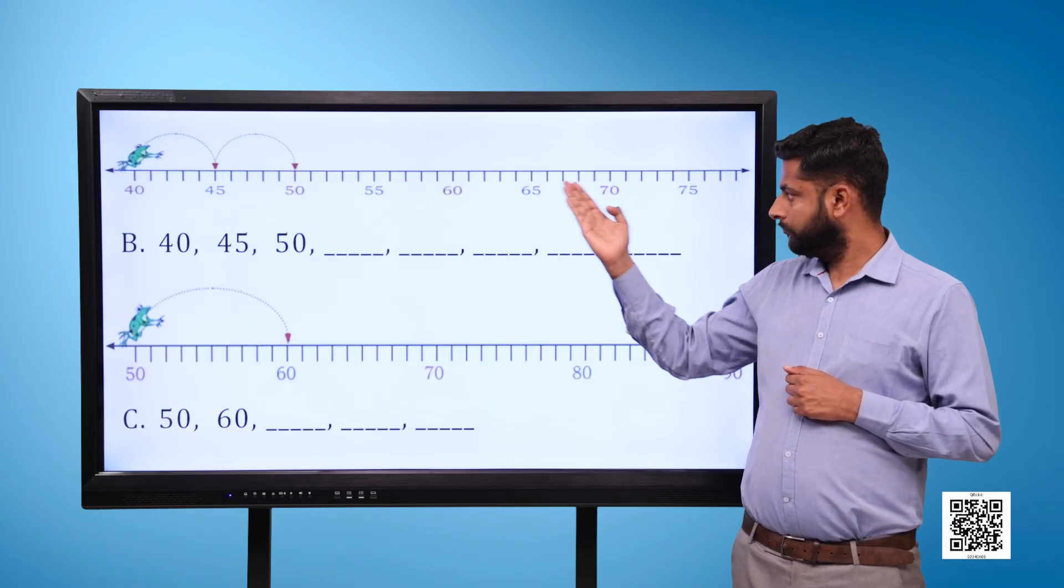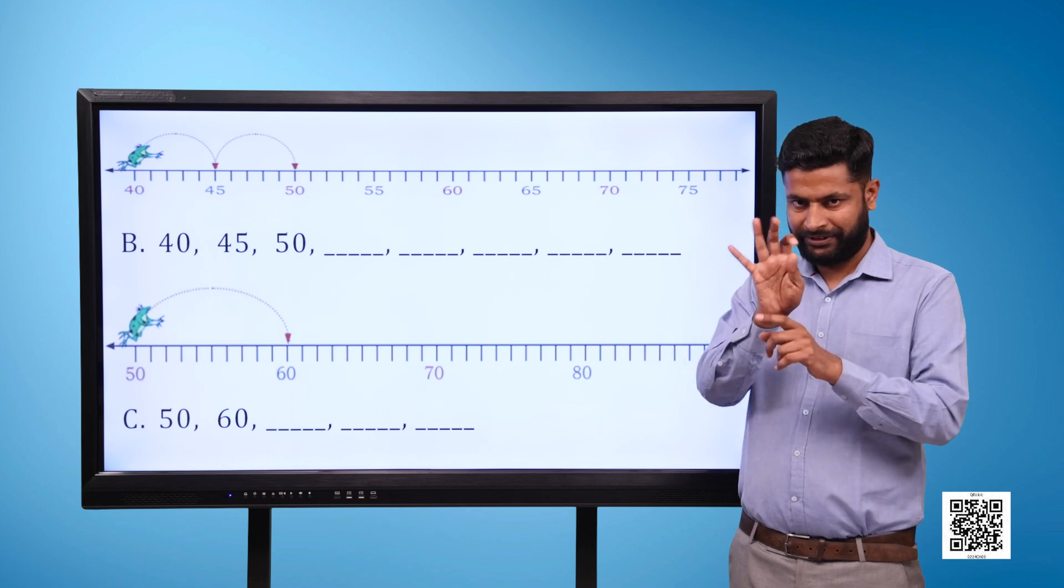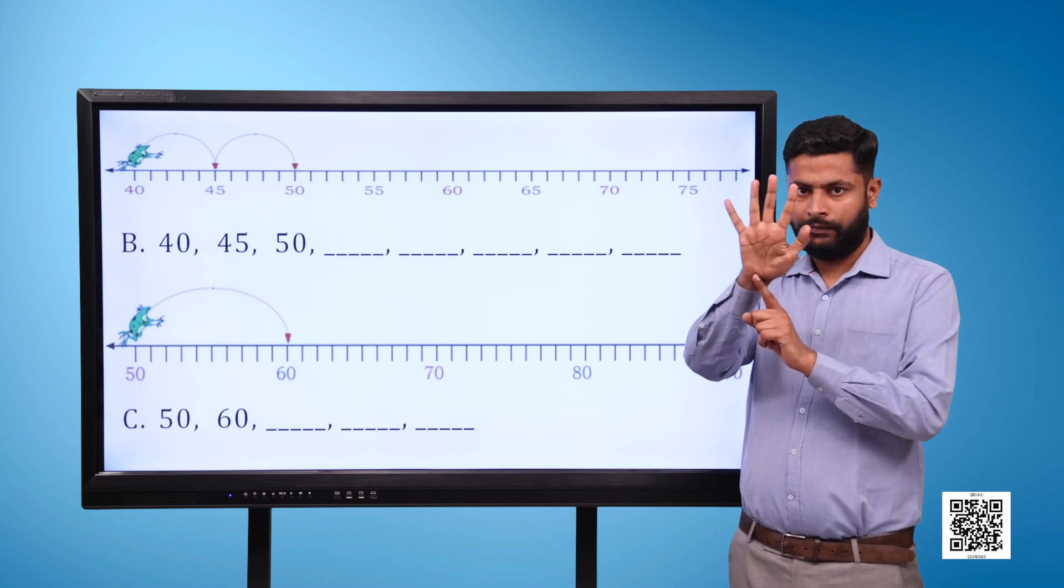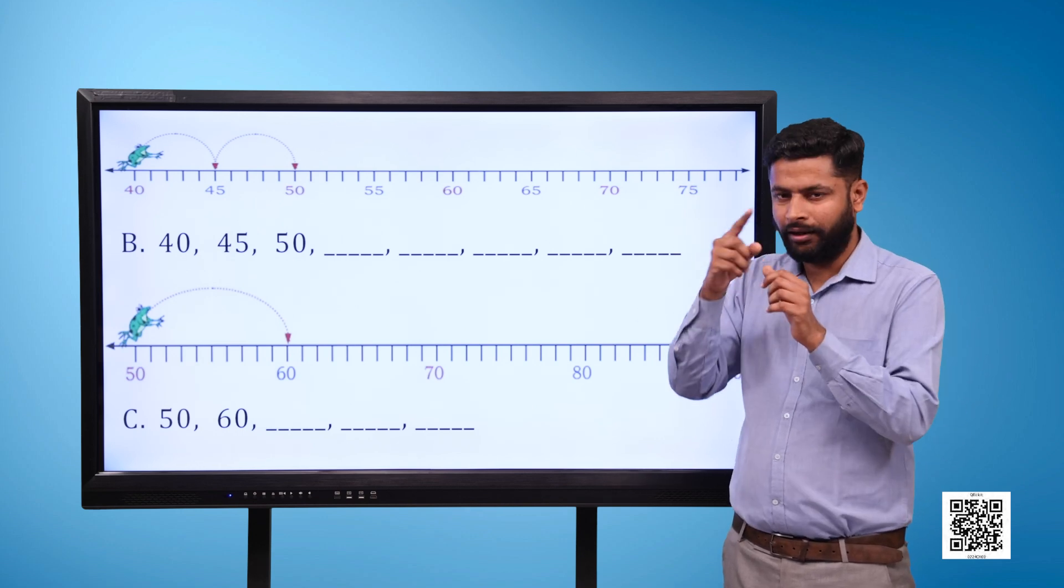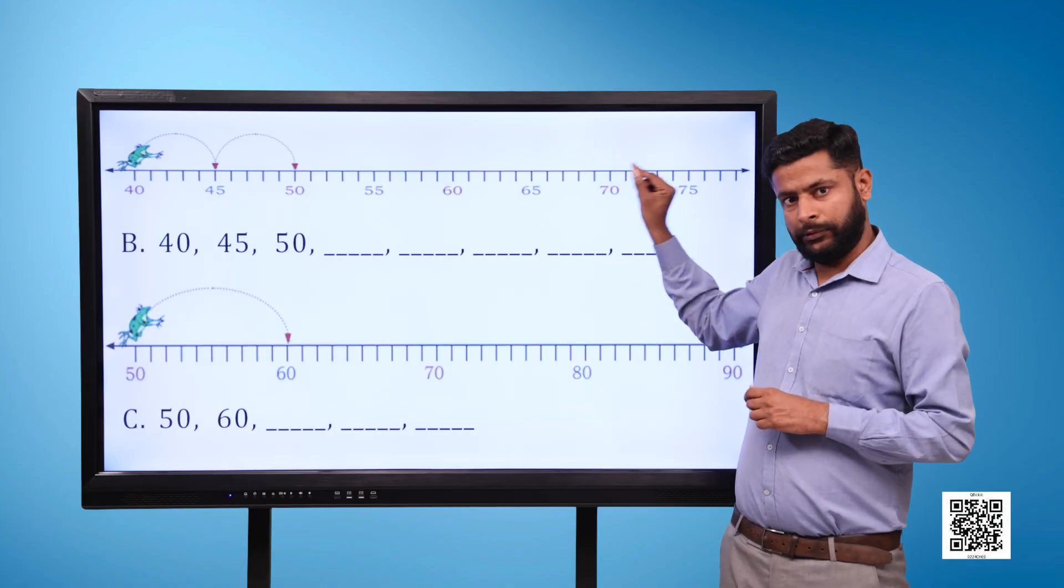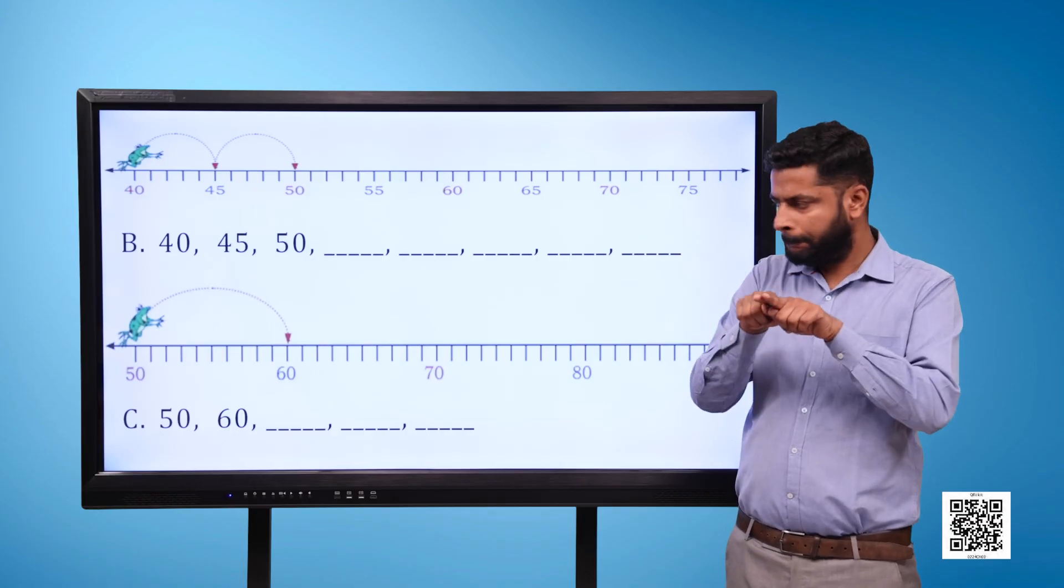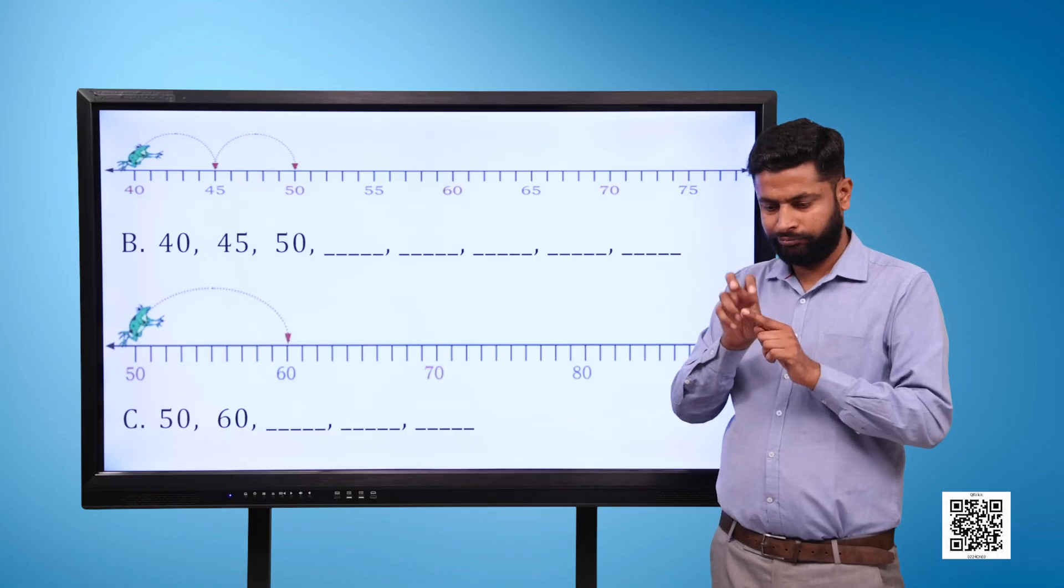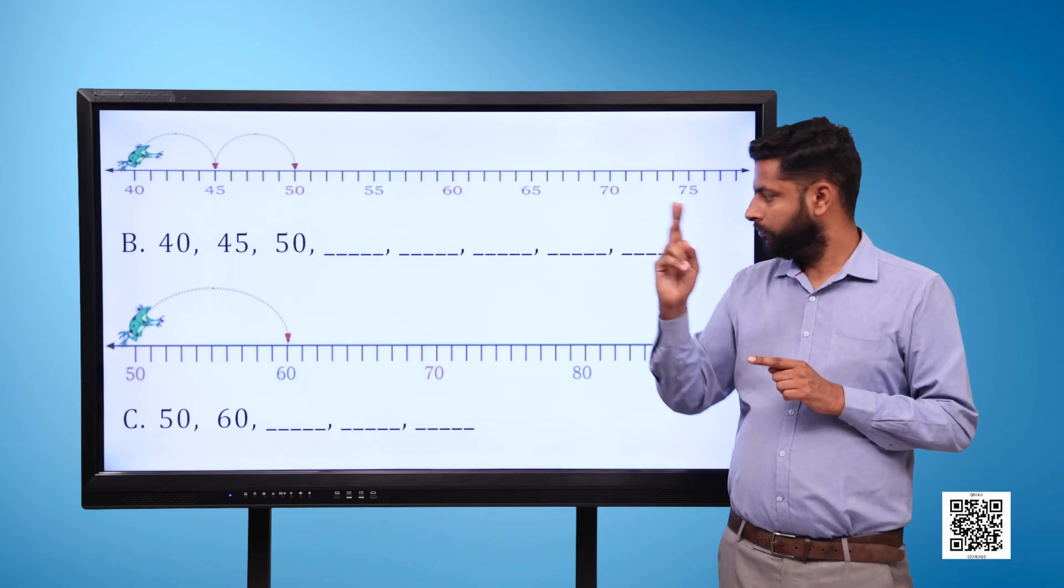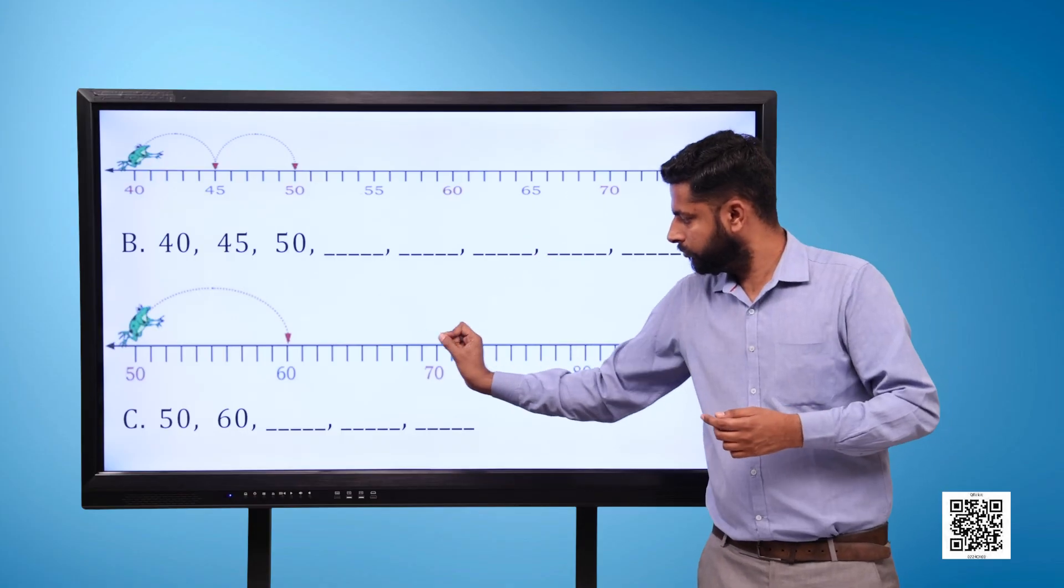Now we have one more number line. The first number is 40 and the last is 75. The frog starts jumping from number 40, then jumps to 45 and finally to 50. This time it starts from number 50 and the final number is 90.